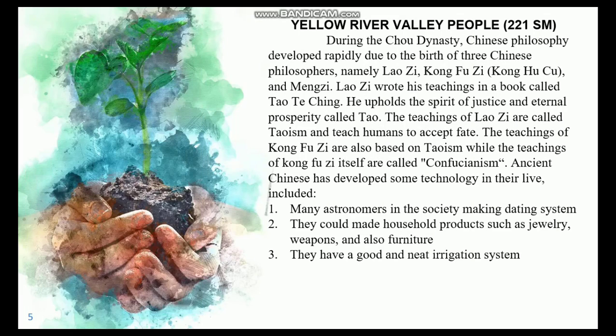The next is the Yellow River Valley People. During the Zhou dynasty, Chinese philosophy developed rapidly due to the birth of three Chinese philosophers: Laozi, Kongfuzi (Konghuchu), and Mengzi. Laozi wrote his teachings in a book called Tao Te Ching, upholding the spirit of justice and eternal prosperity called Tao. The teachings of Laozi are called Taoism and teach humans to accept fate. The teachings of Kongfuzi are also based on Taoism and are called Confucianism.